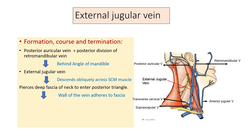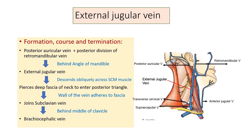After piercing the deep fascia, it passes to the middle of the clavicle. At the point where it pierces the deep fascia, the walls of the vein are adherent to it. It then joins the subclavian vein behind the middle of the clavicle to form the brachiocephalic vein. So in summary: it begins behind the angle of the mandible, runs obliquely across the sternocleidomastoid muscle, pierces the deep fascia, and joins the subclavian vein.